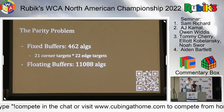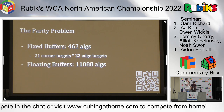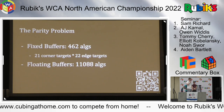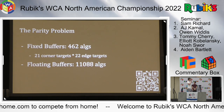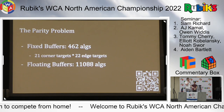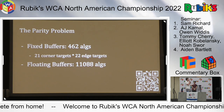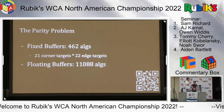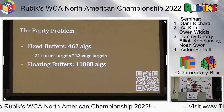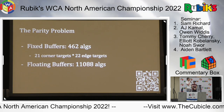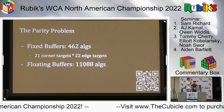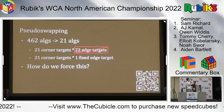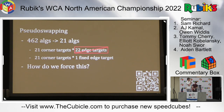The issue is that for any given last corner target and last edge target there are 462 algorithms - a lot of them aren't optimized. They're really hard to learn especially when you're starting out, and this blows up when you start learning floating buffers, going to 11,000 cases. So how we solve this is using something called pseudoswapping.